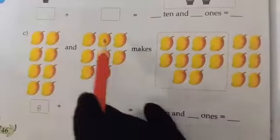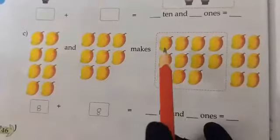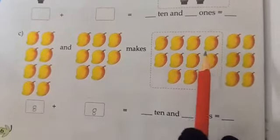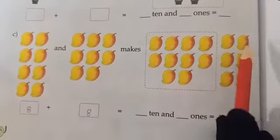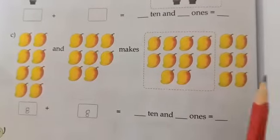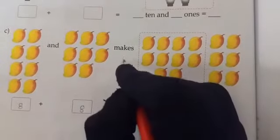Now add together. You have to add both. 1, 2, 3, 4, 5, 6, 7, 8, 9, 10, 11, 12, 13, 14, 15, 16. So 8 plus 8 makes 16. Write here separately.